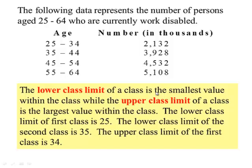There's a total of four classes here and the corresponding frequency. The lower class limit of a class is the smallest value within the class, while the upper class limit is the largest value within the class. So the lower class in this example would be 25, 35, 45, and 55. The upper class limits would be 34, 44, 54, and 64.